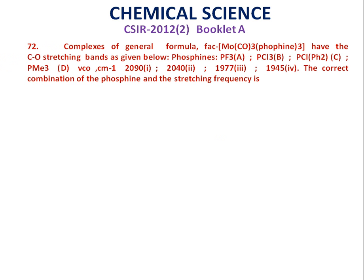Complexes of general formula facial-tricarbonyl-triphosphine-molybdenum have the CO stretching bands as given below. The phosphines are PF₃, PCl₃, PClPH₂, and PMe₃. The CO stretching frequencies in cm⁻¹ are 2090, 2040, 1977, and 1945.